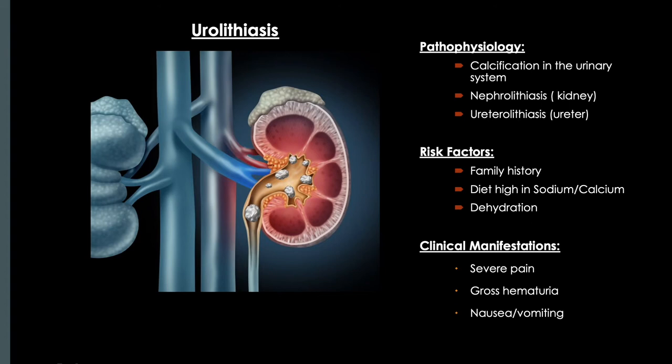Now we have urolithiasis, which is another term for kidney stones. Stones lodged within the ureters use the prefix 'uro.' Nephrolithiasis refers to stones in the nephrons. Kidney stones are characterized by calcified deposits that form in the urinary tract. Risk factors include family history and a diet high in sodium and calcium — hypercalcemia and hypernatremia can lead to kidney stones.